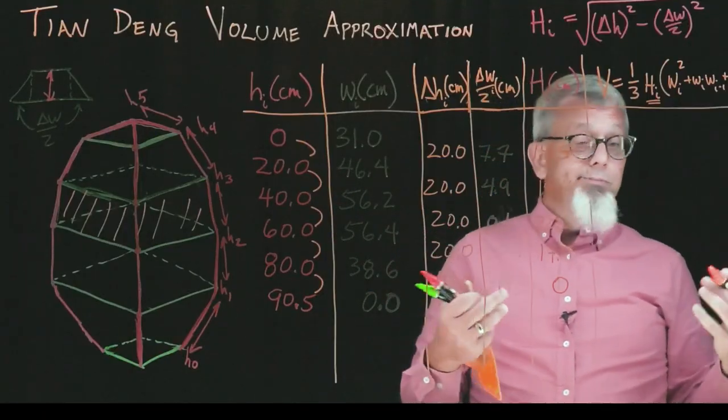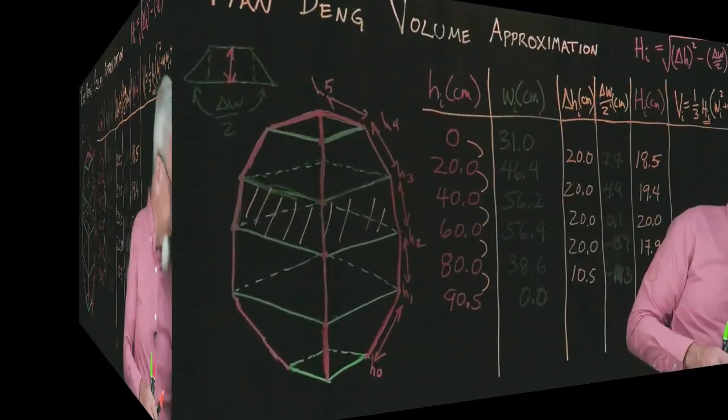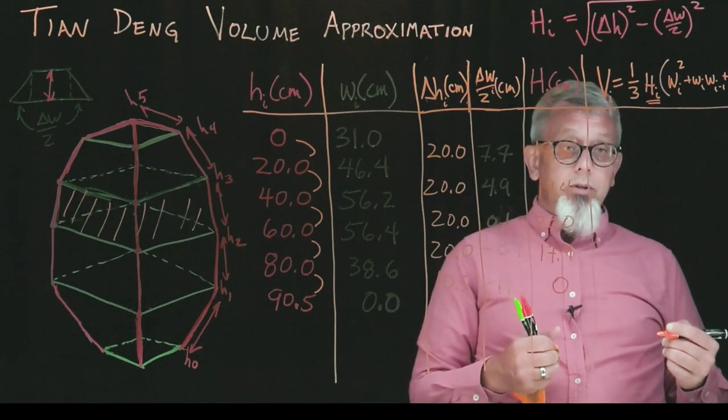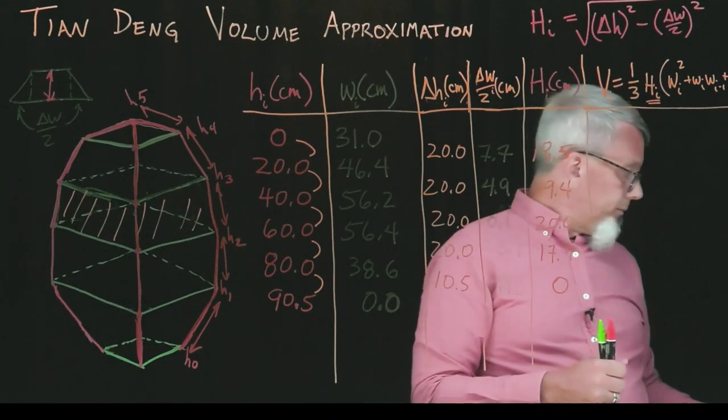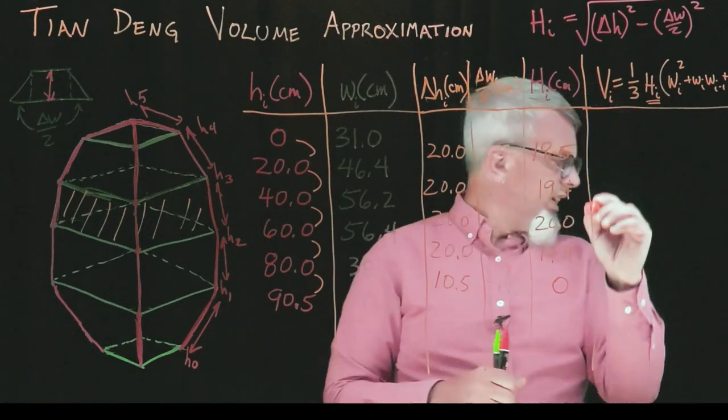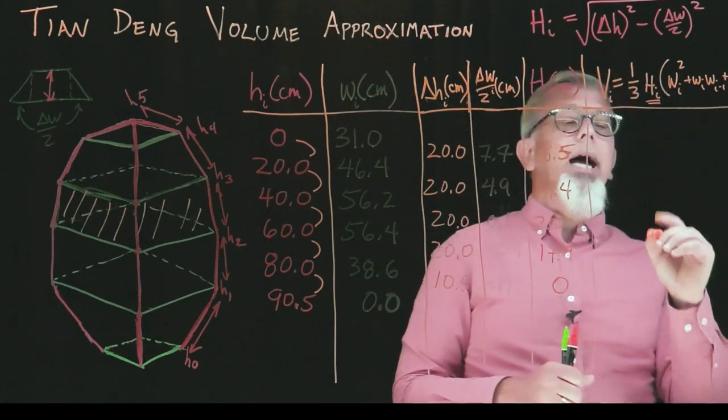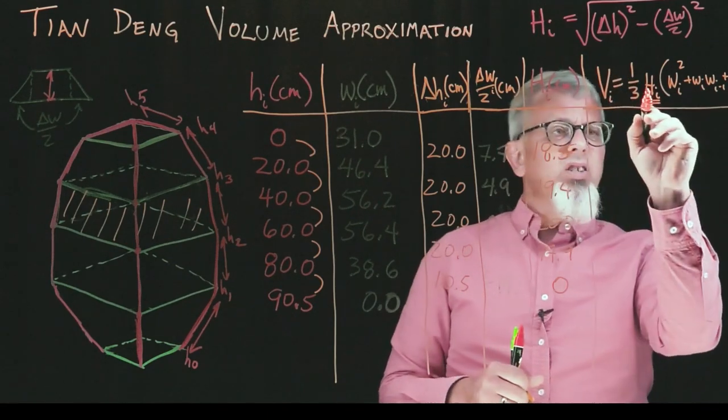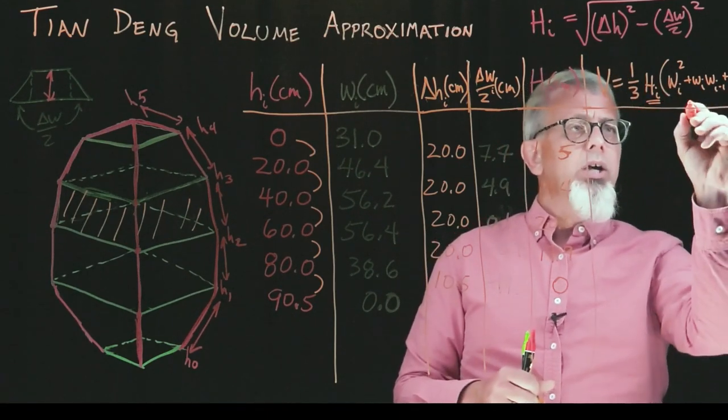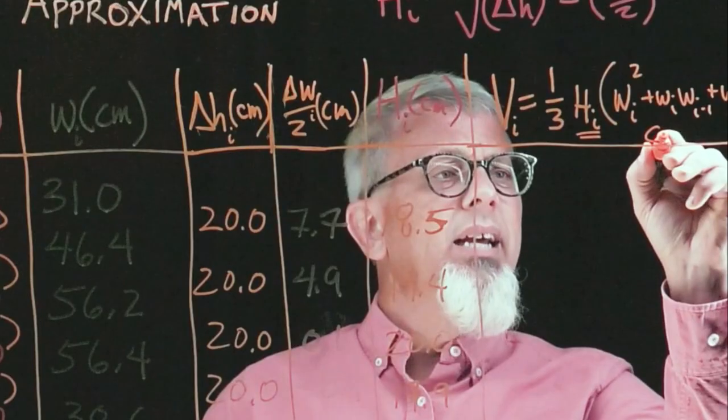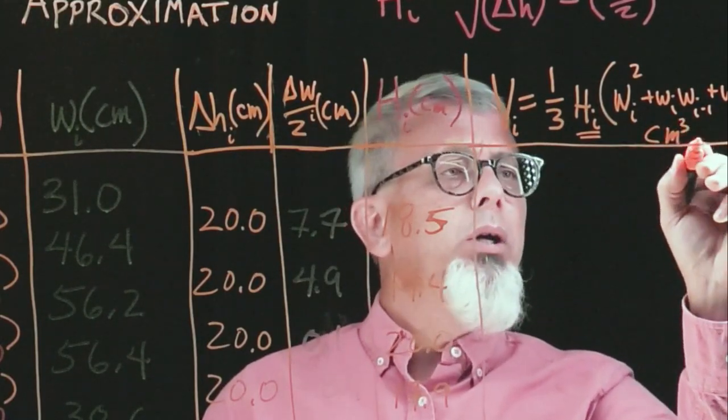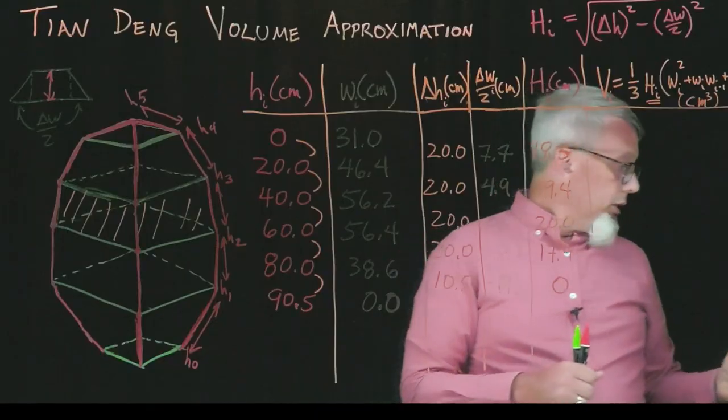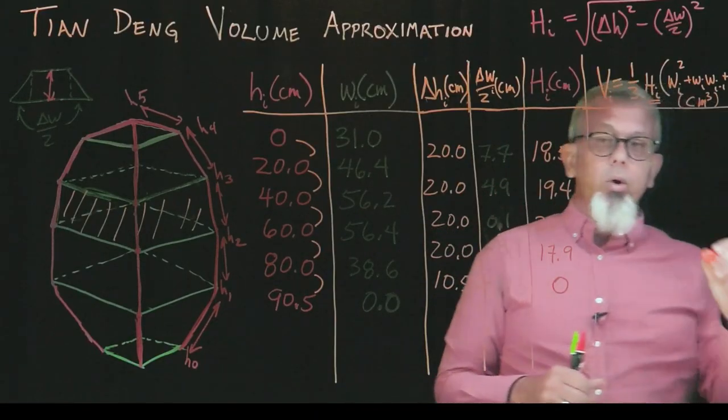I'm going to go ahead and record the values that I've calculated here. What are the units? There's a centimeter there, and there's centimeters squared in each of these. So this is going to be in centimeters cubed, or we could also record that as cc's, cubic centimeters. There's our volume. Let me go ahead and record each piece.